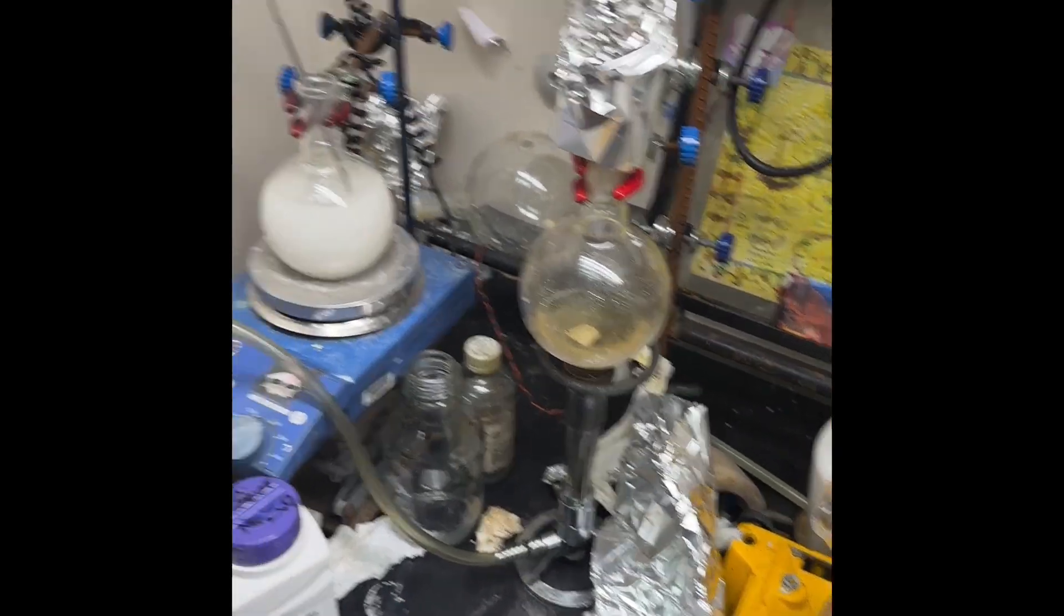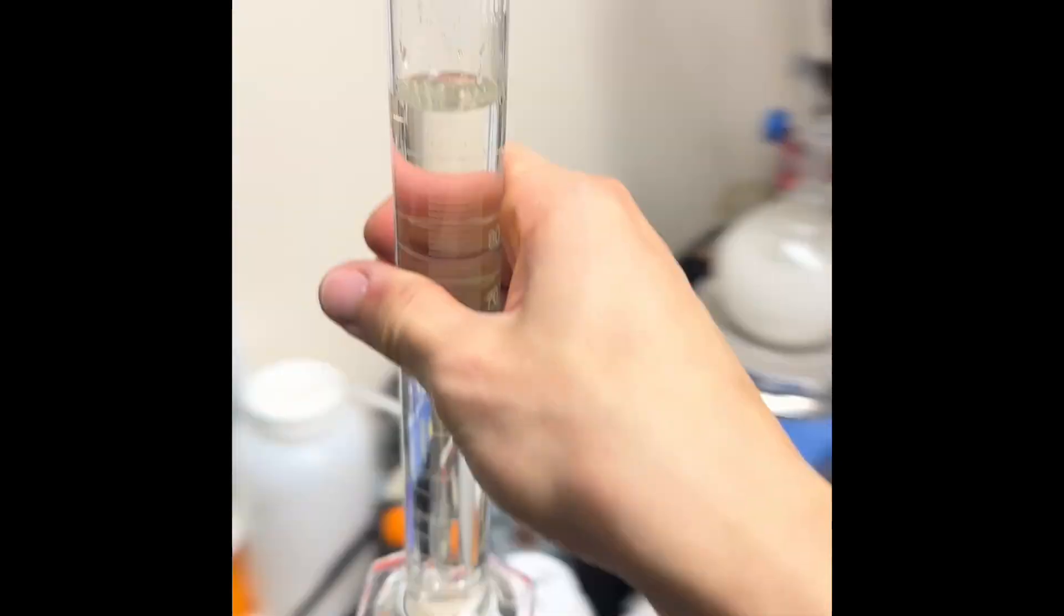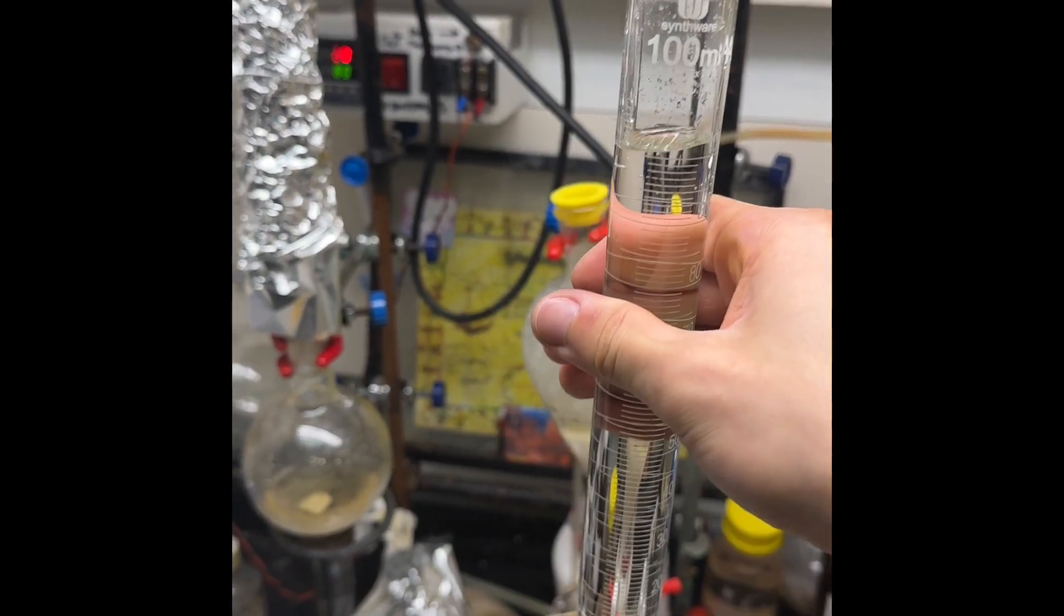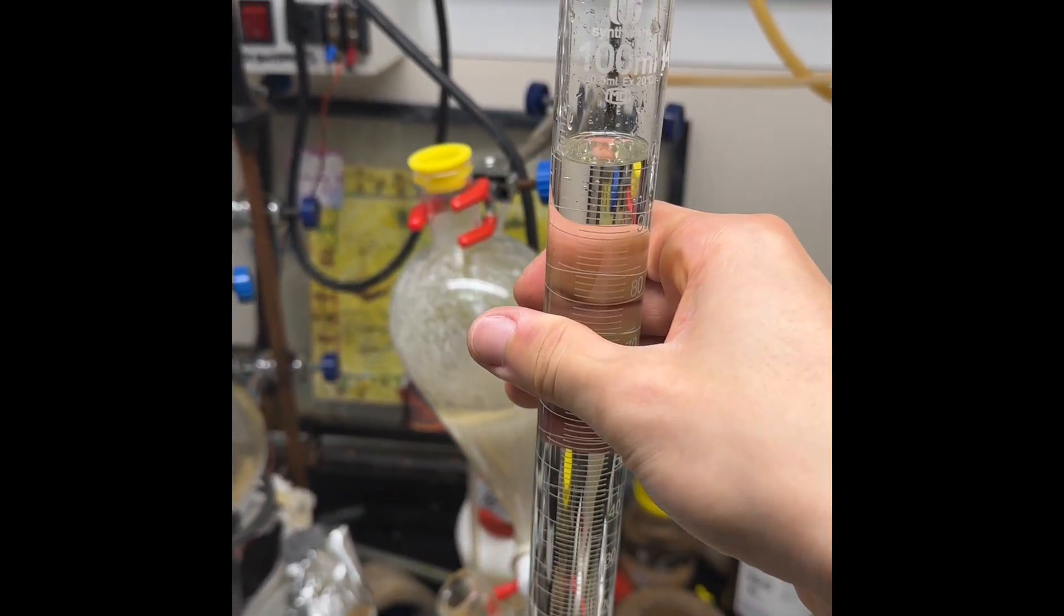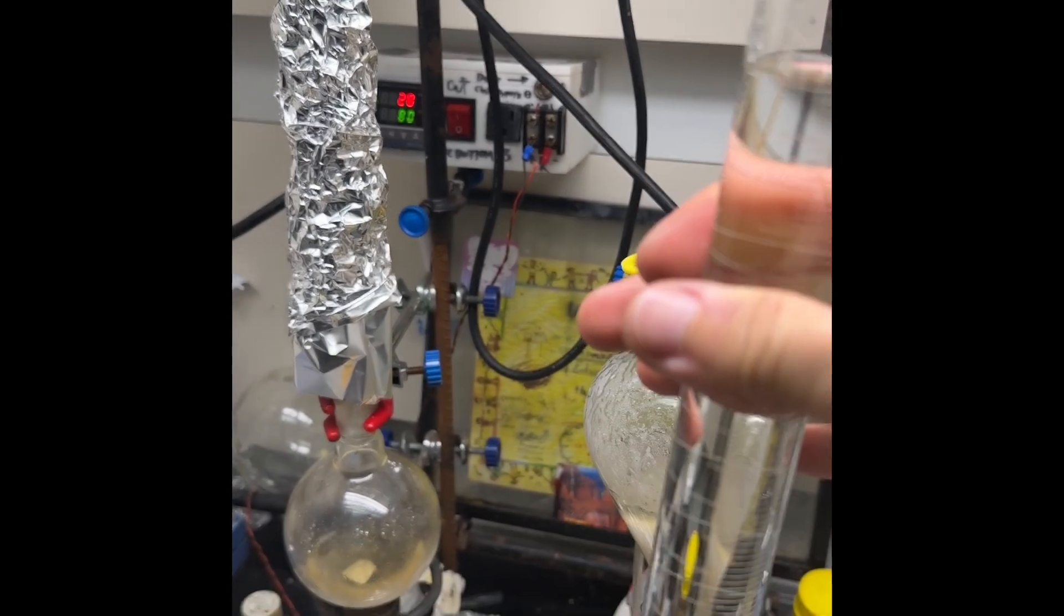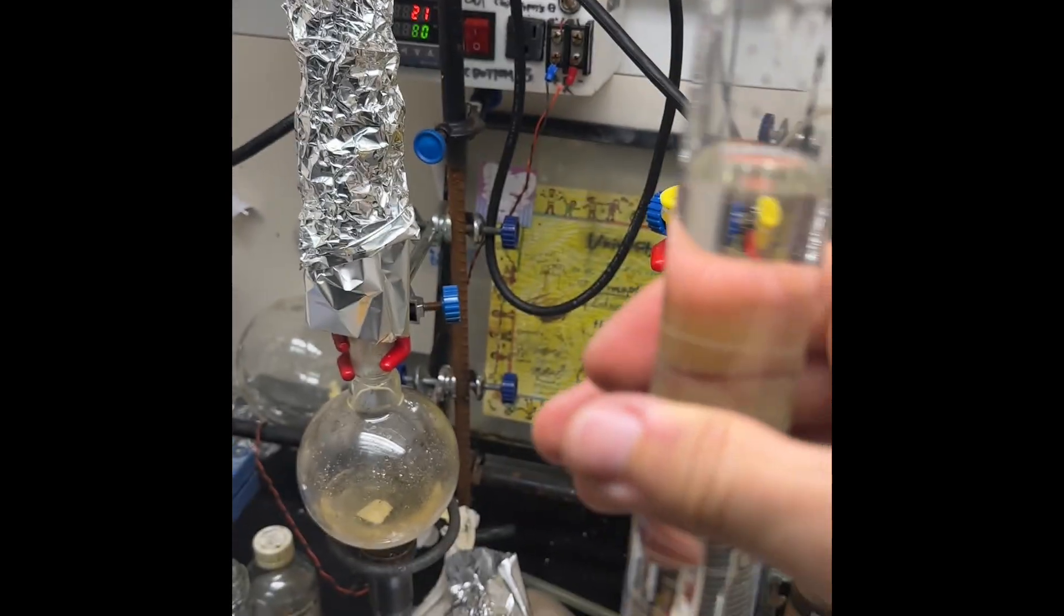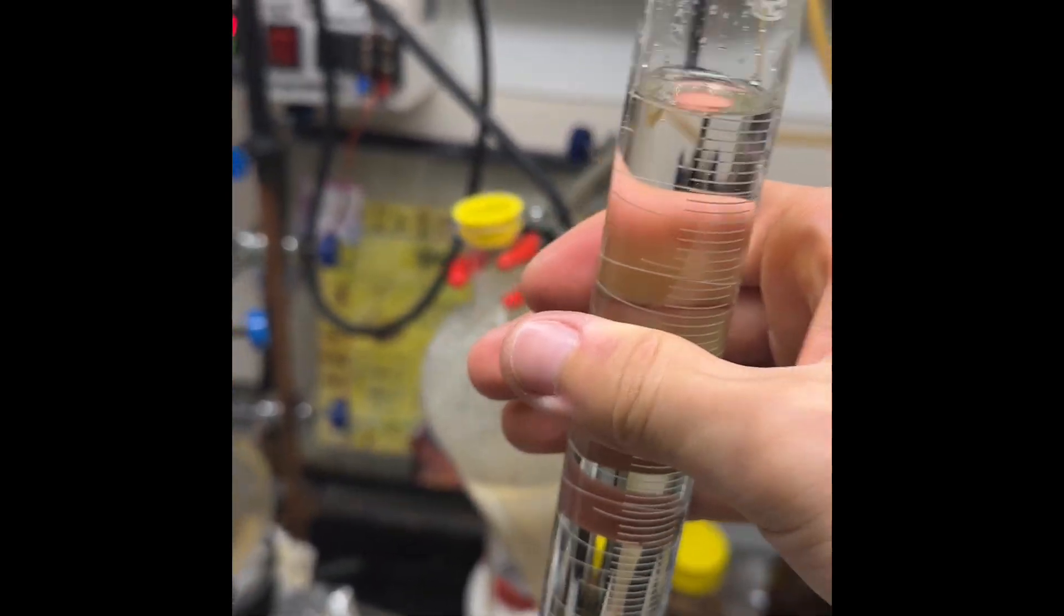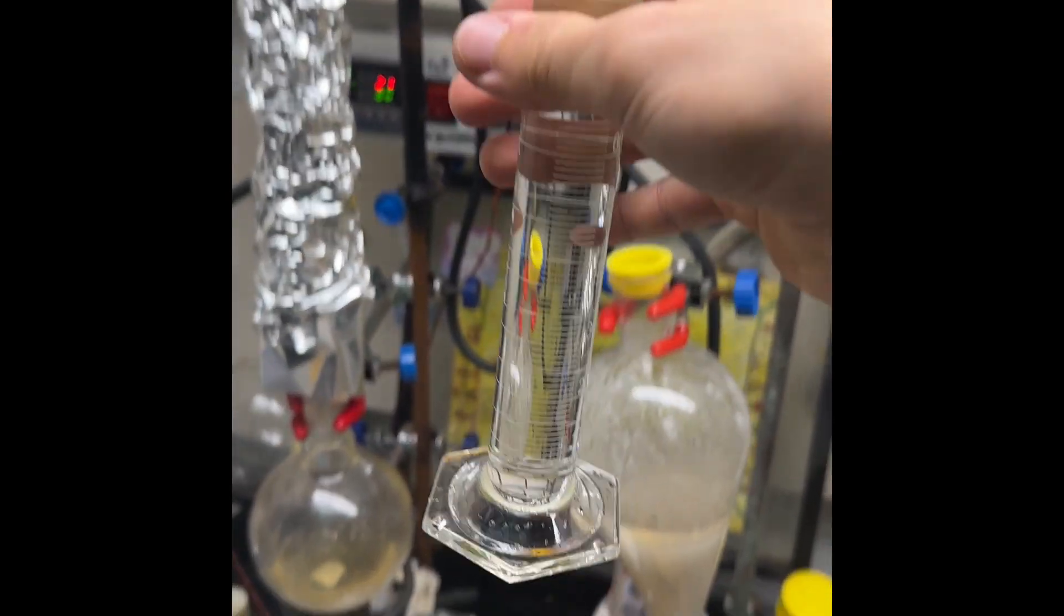There you go, there's how to make hydrobromic acid without a stupid ice bath, without adding a ludicrous amount of water, and it's completely bromine-free. It's called basic redox. You add a reducing agent to it, voila.